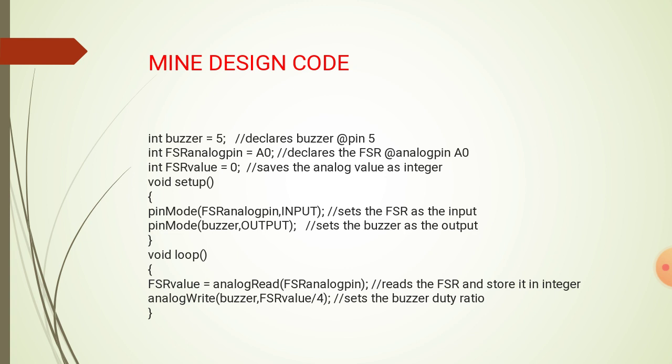It is the code for the design. The first one is int buzzer equals 5, which declares the buzzer pin at 5. Int FSRanalogpin equals A0 declares the FSR at analog pin A0. Int FSRvalue equals 0 saves the analog value as integer.